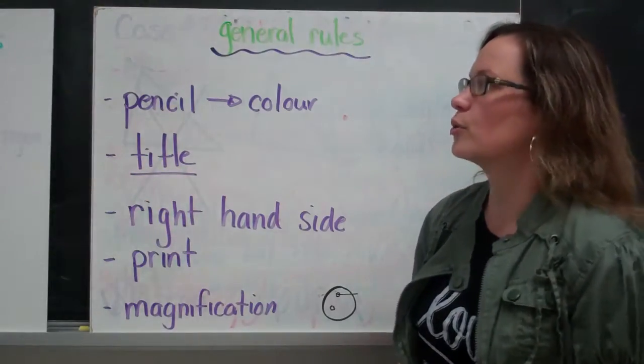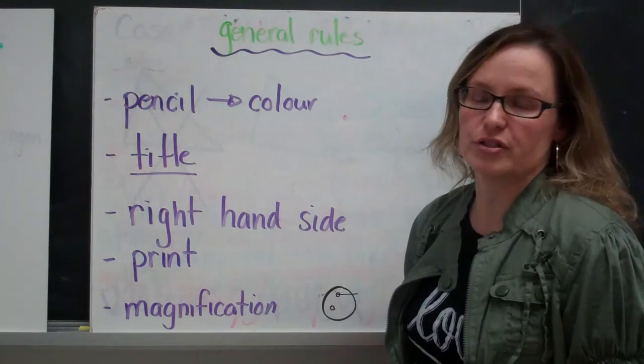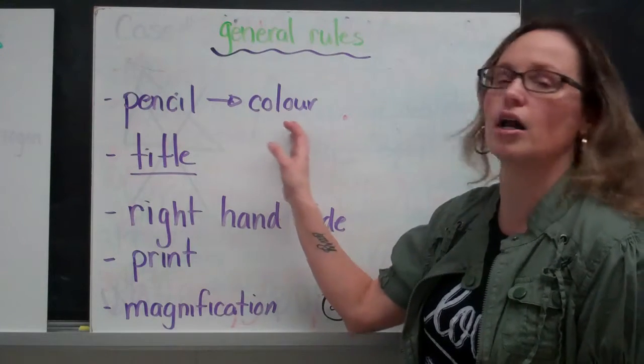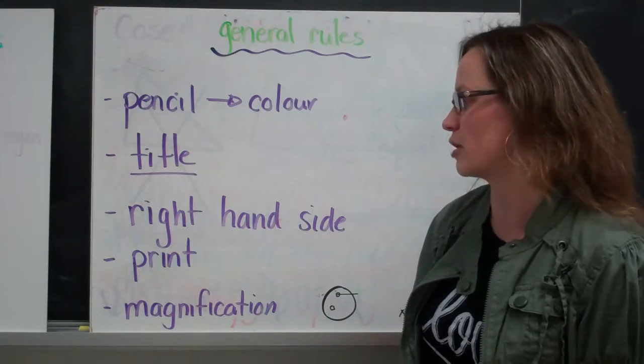So the general rules of making a scientific drawing are, it should always be done in pencil first, and then you can move on to color if you'd like to show different pieces of information on your illustration.